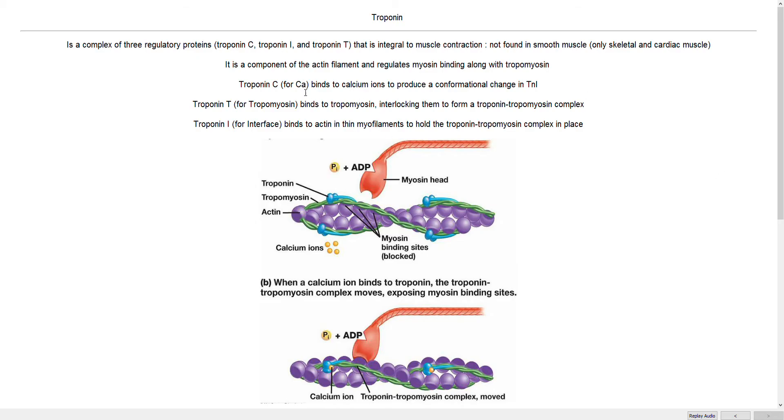So what do each of these little components do, troponin C, troponin I, and troponin T? Well, troponin C, you can think of it as C for calcium or C for contraction. Calcium is going to bind troponin C and move tropomyosin out of the way, so that the myosin head can bind actin and initiate contraction.